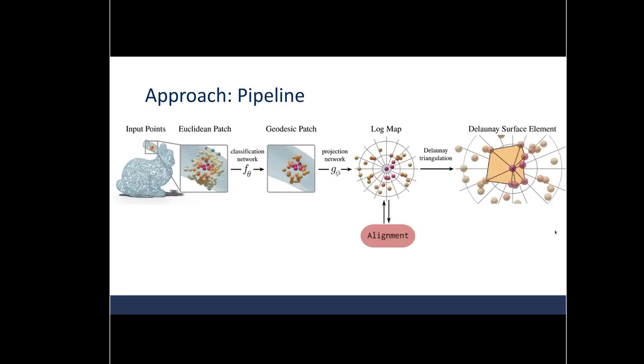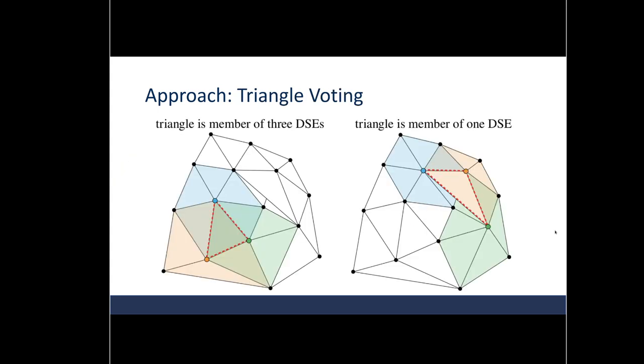The final step of the pipeline is to do Delaunay triangulation of the corrected log maps. Delaunay triangulation of these corrected log maps then gives us our Delaunay surface elements. And there's one more step, which is combining the DSE's. So now we have these DSE's, how do we combine them? After running the pipeline, each triangle will belong to three DSE's. Triangles that belong to three DSE's are guaranteed to be manifold, while triangles that belong to only one DSE are considered the least likely. And a selection algorithm then prioritizes all the triangles belonging to only two DSE's.